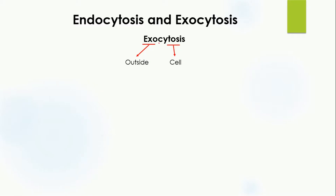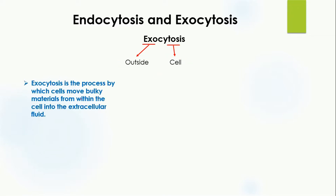The second main process is exocytosis, made up of 'exo' and 'cytosis.' Exo means outside, so exocytosis means outside the cell. In exocytosis, the cell moves bulky material from within the cell to the extracellular fluid. For example, bulky material inside the cell is transported out by the process of exocytosis.